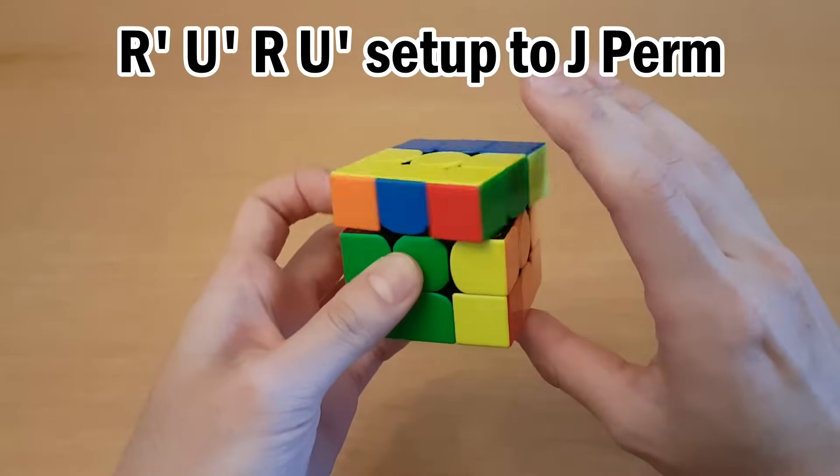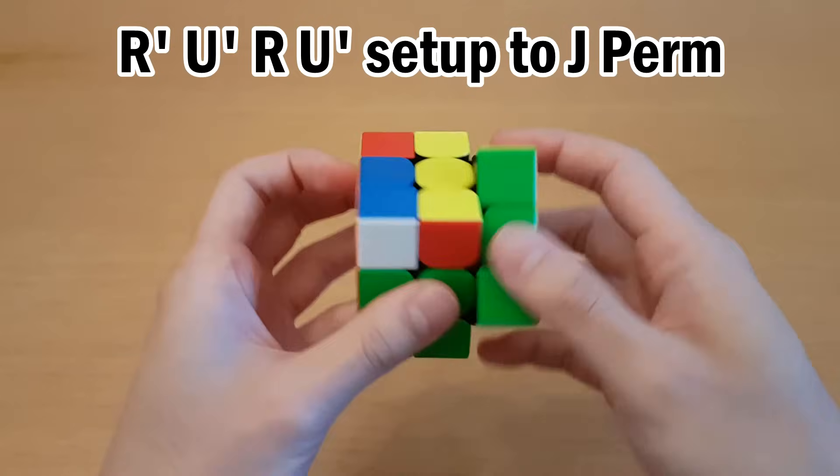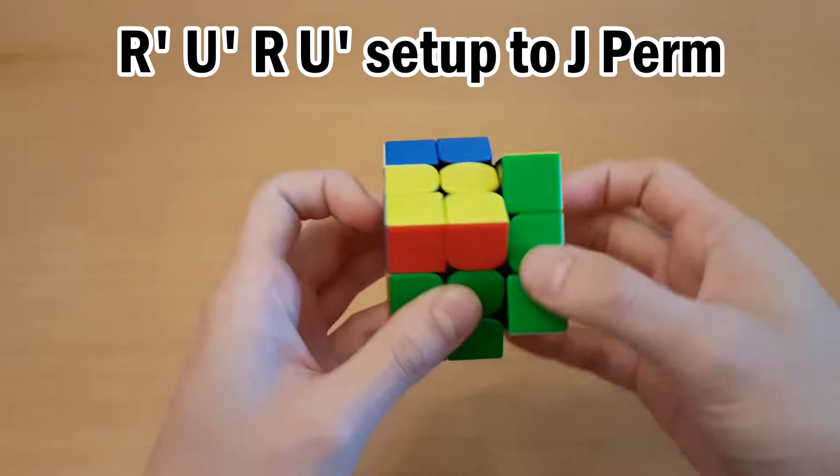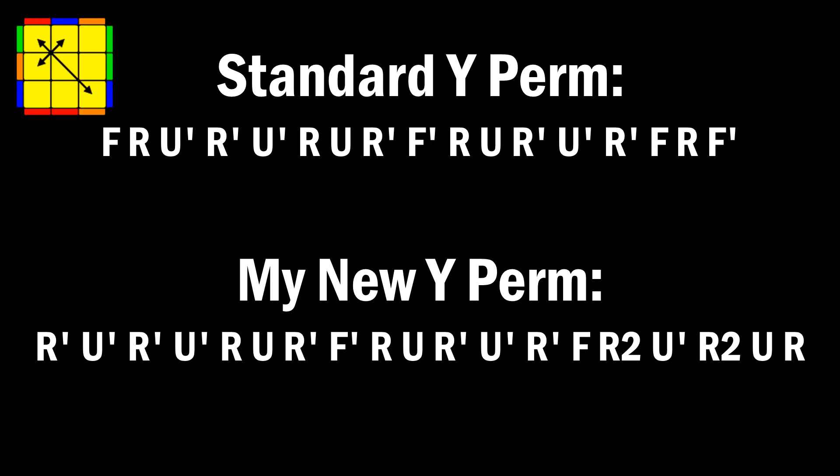This is a Y perm. If you do four moves, you can set it up into a J perm, which is a nicer algorithm than a Y perm. Compared to the standard Y perm, mine is only two moves longer, but it saves you from having to re-grip in the beginning. Two moves versus a re-grip seems like it might be good.